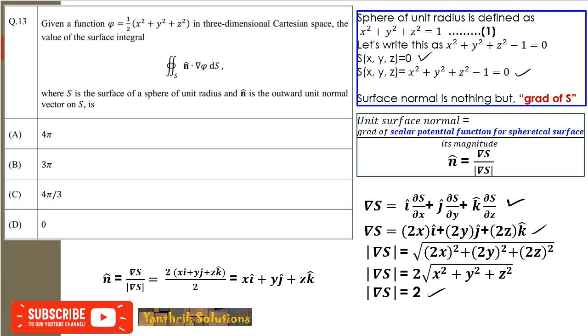If you substitute the corresponding surface function here, you will get del S as 2x i + 2y j + 2z k.